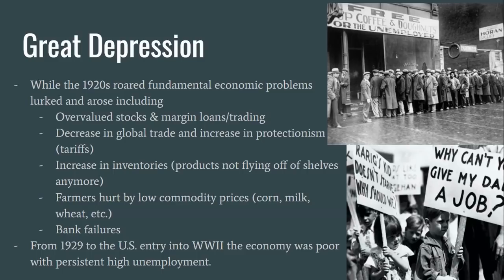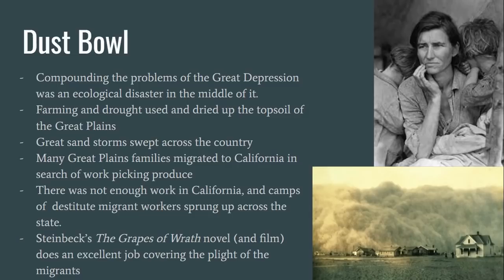The long-term effects of the problems were devastating, and the U.S. would not fully get out of the Depression and high unemployment until World War II. A compounding problem during the Great Depression was an ecological disaster called the Dust Bowl. Farming the Great Plains had always been difficult with a lack of water and lackluster soil, and when several years saw drought conditions, the topsoil dried up and became sand. With few trees or other obstructions, the winds of the plains whipped up great sandstorms that swept across the country. Much of the land was now useless to the plains farmers. Leaflets circulated that there were abundant crop-picking jobs out in California, drawing a great migration out of the plains into the West Coast. Some found work, however there was not enough of it, and camps sprung up around California of destitute migrant workers. Steinbeck's classic novel, The Grapes of Wrath, does an excellent job of covering the plight of the migrants.